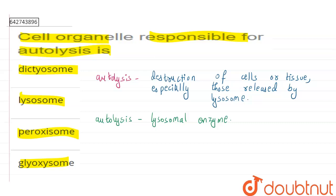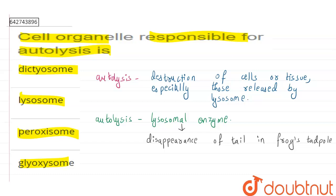Now, how does this destruction help us? In frogs, it helps in the disappearance of the tail in the tadpole stage. The tadpole is basically the younger or birth stage of the frog. When a frog is born, it is born with a tail, but as it matures, the tail disappears. This disappearance is facilitated by lysosomal enzymes through the process called autolysis.